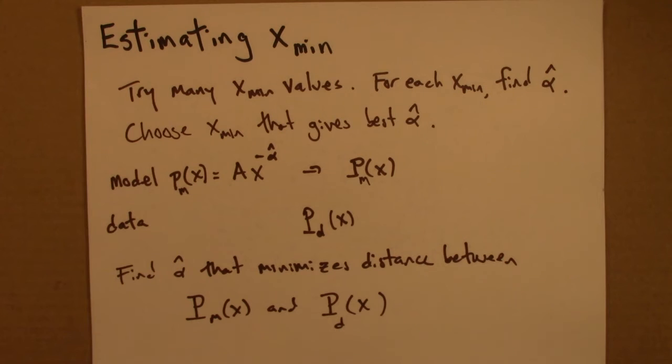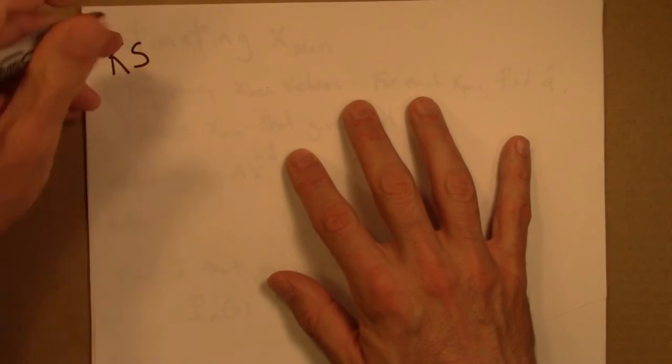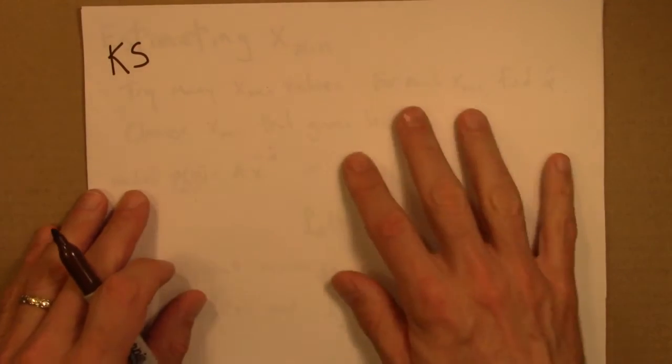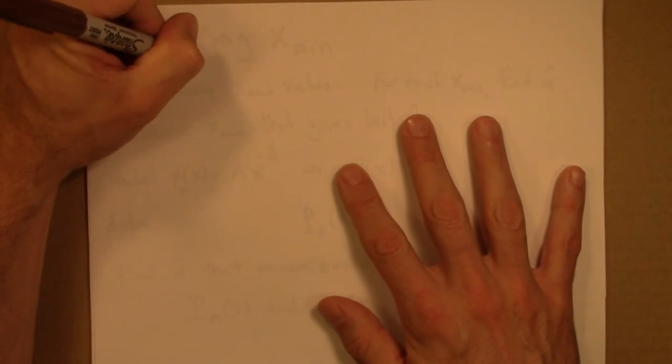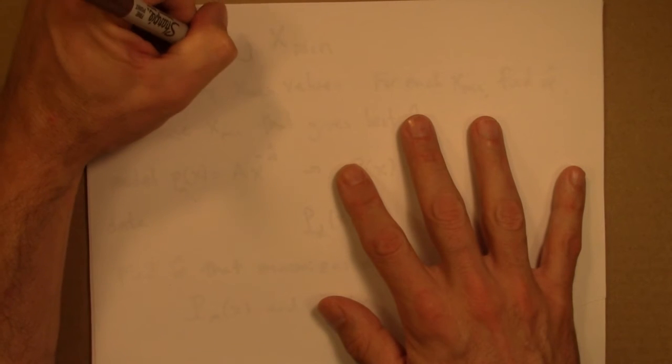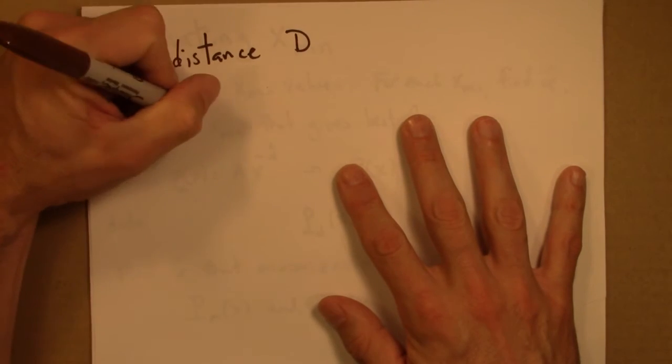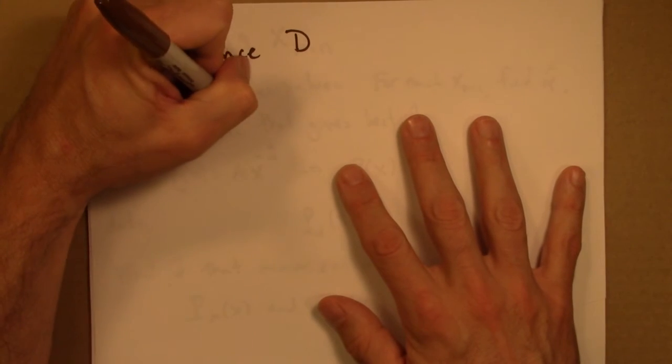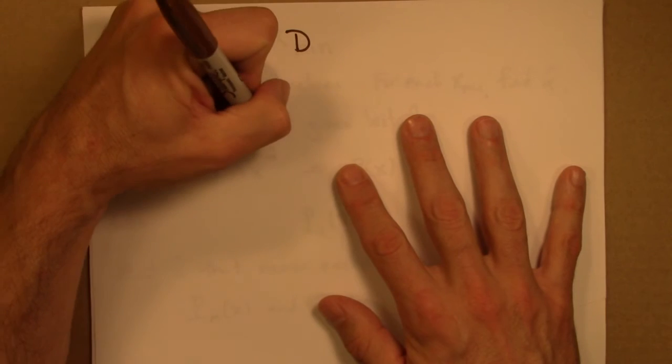The last thing I'll need to do is specify what distance function to use. And a standard approach is to use what's called the Kolmogorov-Smirnov distance. Which I'm going to be a coward and not write out. Discretion is the better part of valor.